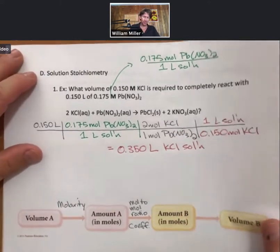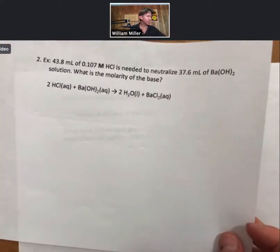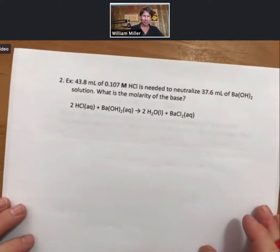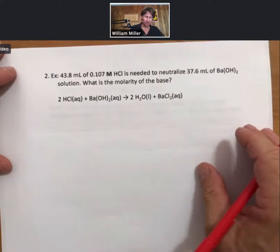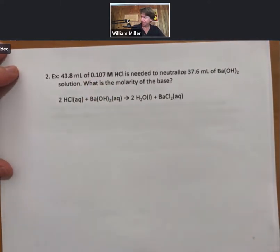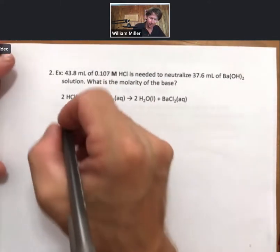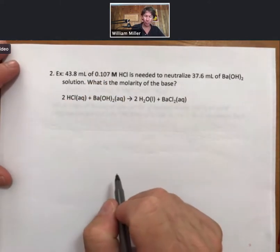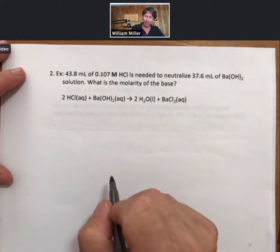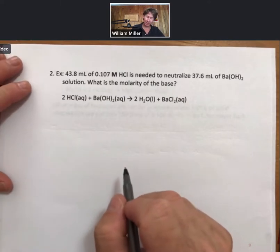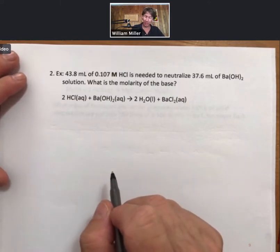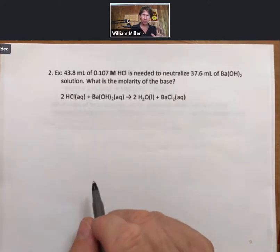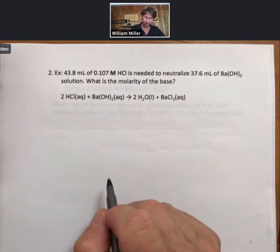Now, a slightly different example, but still pretty similar, is going to involve 43.8 milliliters of 0.107 molar HCl needed to neutralize some barium hydroxide. What is the molarity of the base? So this time we're not asking for volume, we're asking for molarity. So I just want to give myself a little heads up what we're looking for here.